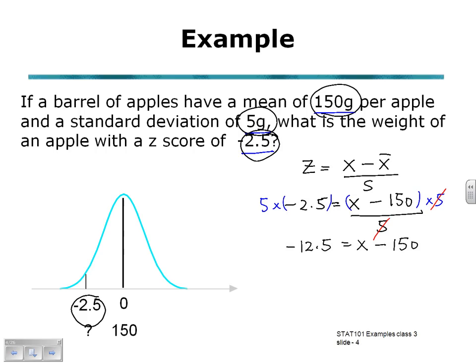To solve for X, we will need to add 150 to both sides to leave X on its own. So X will be 150 subtract 12.5, giving a value of 137.5 grams. So the weight of this apple with a Z-score of negative 2.5 is 137.5 grams.